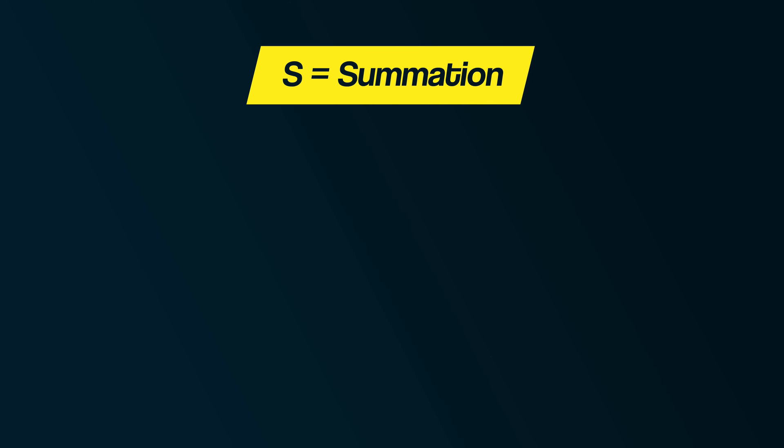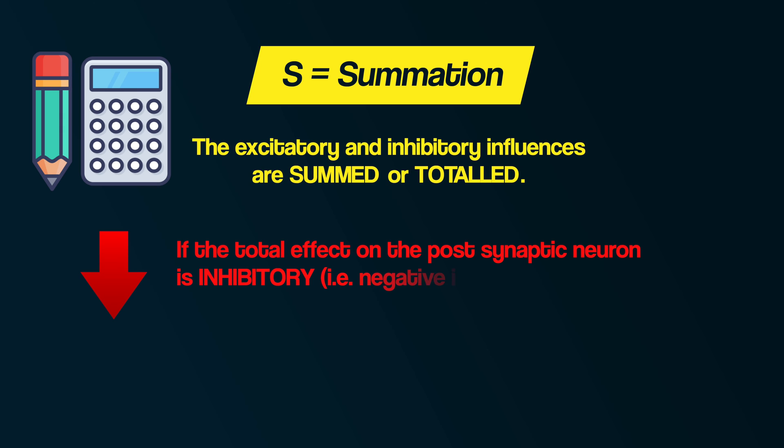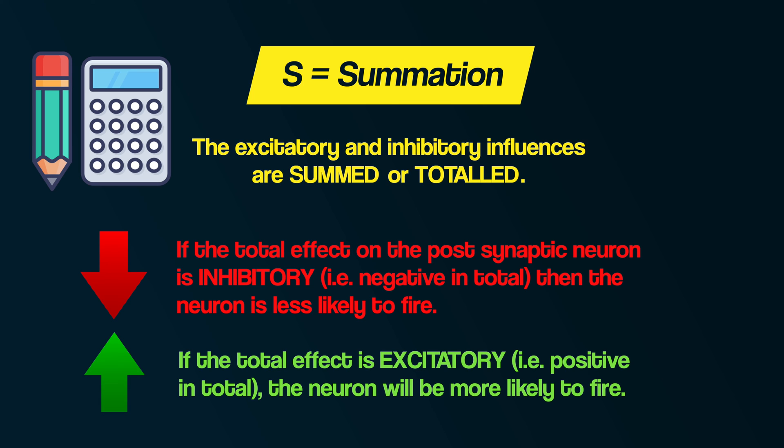Some neurotransmitters have an excitatory effect and some have an inhibitory effect. Summation means that the excitatory and inhibitory influences are summed or totalled. If the total effect on the postsynaptic neuron is inhibitory — negative in total — then the neuron is less likely to fire. If the total effect is excitatory — positive in total — the neuron will be more likely to fire. And that is synaptic transmission.